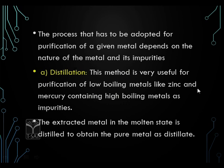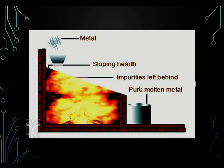Distillation is mainly used for low-boiling metals like zinc and mercury, which have low boiling points. High-boiling impurities can be separated by distillation. The extracted metal in molten state is distilled to obtain pure metal as distillate. This method is very useful for purification of low-boiling metals like zinc and mercury. If it contains impurities with high boiling points, you can easily separate them, and the extracted metal can be separated in molten state.